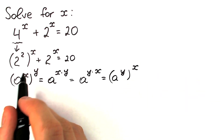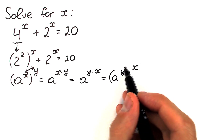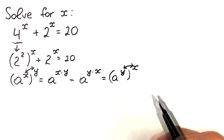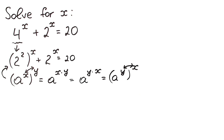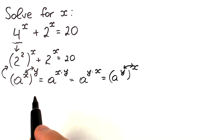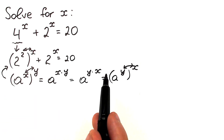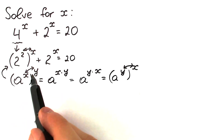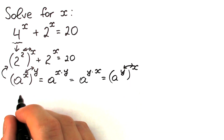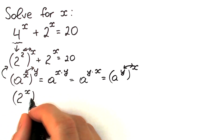Moreover, we can write this as a to the power y raised to the power x. If you look closely, x and y can be swapped — x can go outside and x can go inside the parentheses. Let's apply this rule: for our expression, 2 and x can be easily swapped. So we will have 2 to the power x, raised to the power 2.